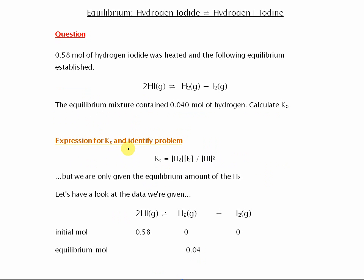So let's write an expression for Kc and identify the problem. Kc being the concentration of the things on the right divided by the concentration of the things on the left. But we're only given the equilibrium amount of the hydrogen H2 there, not the other two.